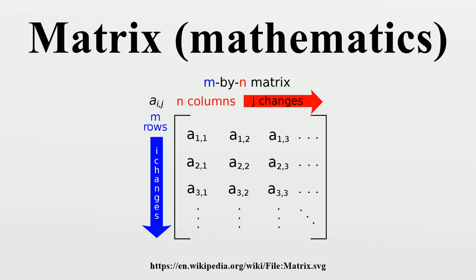A submatrix of a matrix is obtained by deleting any collection of rows and/or columns. For example, from a 3×4 matrix, we can construct a 2×3 submatrix by removing row 3 and column 2. The minors and cofactors of a matrix are found by computing the determinant of certain submatrices. A principal submatrix is a square submatrix obtained by removing certain rows and columns. The definition varies from author to author.